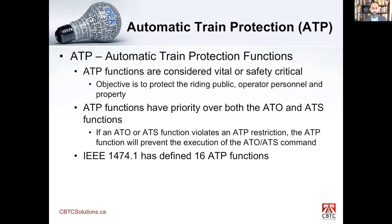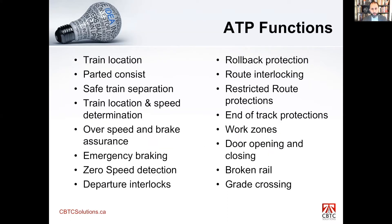IEEE has defined 16 ATP functions; they're in Chapter 6 of the standard. I've categorized these into four broad topics. Some of these functions may be used, some may not, but there are some that are absolutely essential — such as the ability to determine train location, safe train separation, overspeed protection, and braking assurance. Some that are not generally seen include grade crossing and broken rail detection, depending on the architecture.